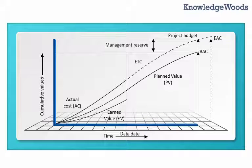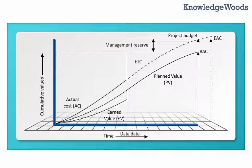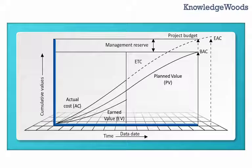If Actual Costs fall under the Budget at Completion curve, it means Planned Value is equal to Actual Cost, which means it is as per the plan. If Earned Value falls under the Budget at Completion curve, it means Earned Value is equal to Planned Value, which means it is also as per plan.